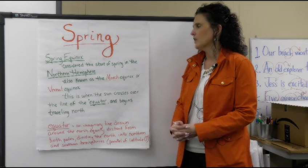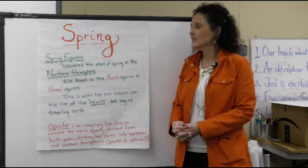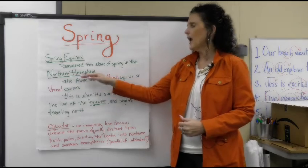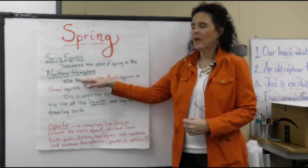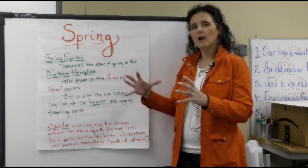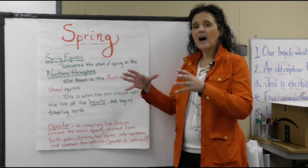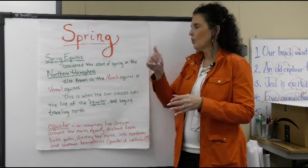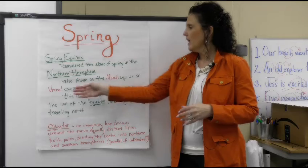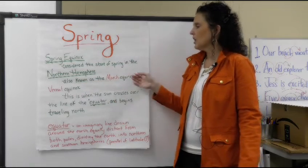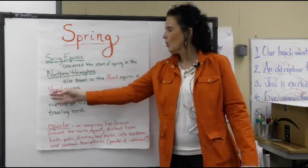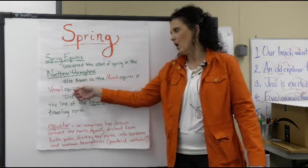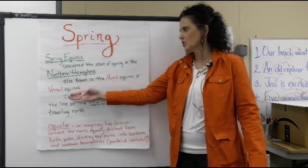First of all, let's look at the spring equinox. That's considered the start of spring in the Northern Hemisphere. If you look at a globe and it's divided into half — hemi means half — so the northern half. That's also known as the March equinox, or sometimes another name for spring is vernal equinox. That means spring.